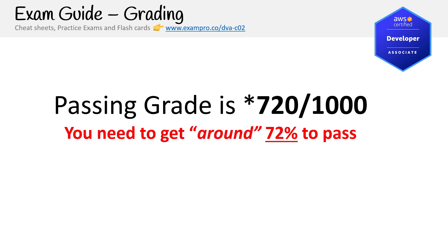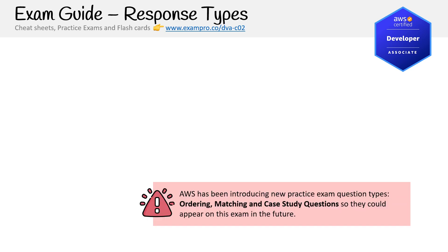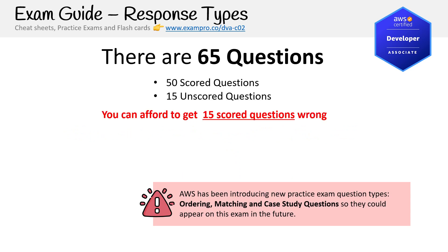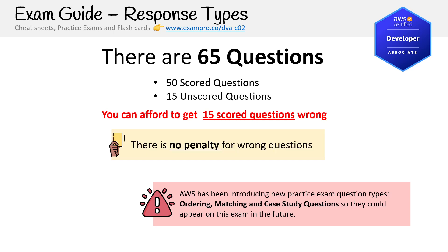Your passing grade has to be 720 out of 1000, which is 72%. Due to the point system, you could technically have 72% or even 73% and still fail, so you want to aim 10–15% above that. For the response types, there are 65 questions total: 50 are scored and 15 are unscored. So you get 15 questions you can essentially get wrong without it affecting your score. There's no penalty for wrong answers, so attempt every question.